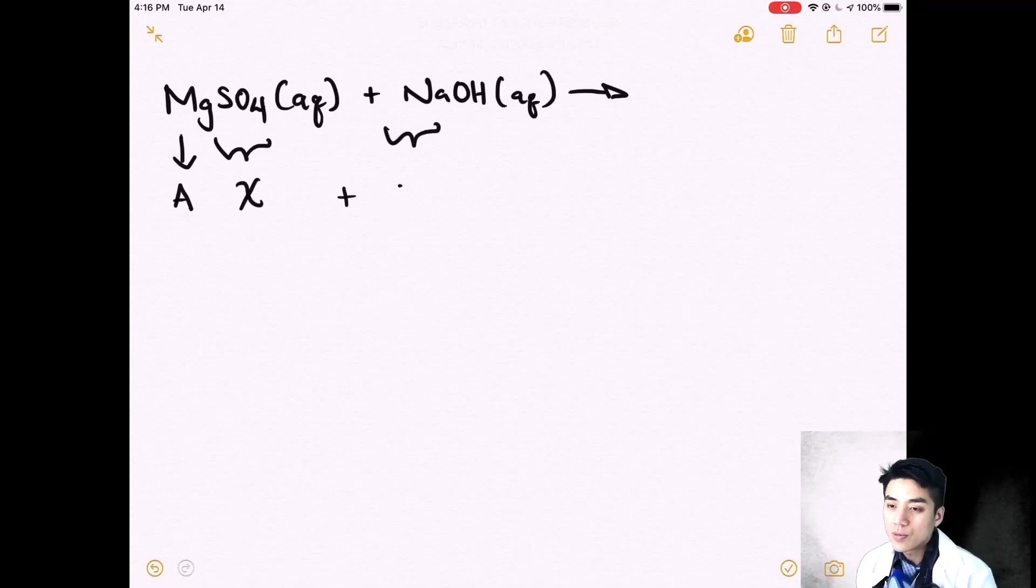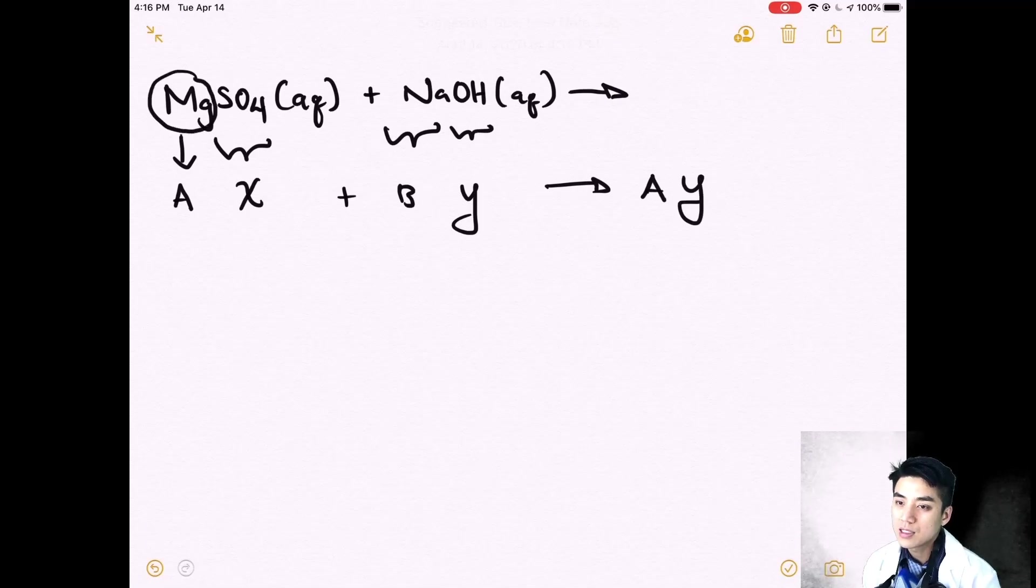It's in the form again AX plus BY, and on the product side it's going to make AY plus BX. First we're going to circle A, we're going to circle Y, and write it on the product side. So it's going to make magnesium hydroxide, Mg(OH)2, because I need to crisscross the charge over.